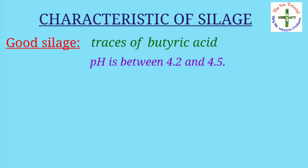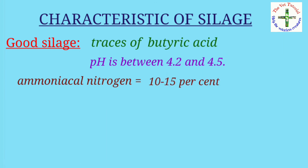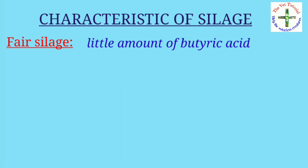Good silage may have a trace of butyric acid with pH between 4.2 to 4.5, and the amount of ammoniacal nitrogen is 10 to 15 percent of total nitrogen; other characteristics are the same as very good silage.